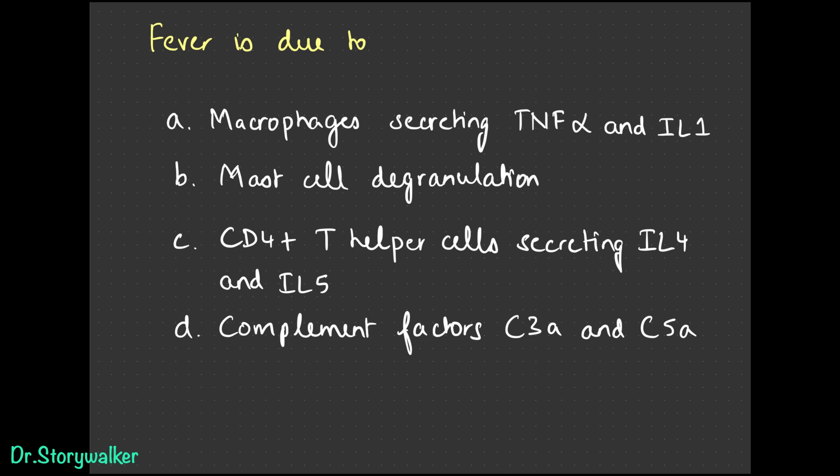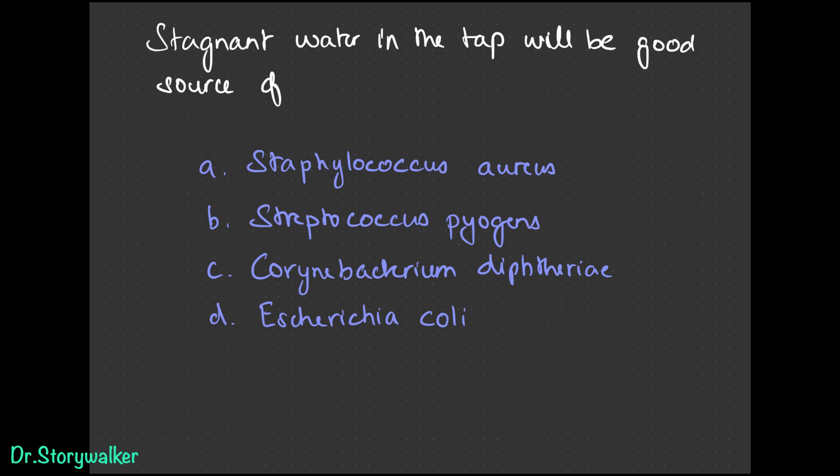What causes fever? It is macrophage-secreted tumor necrosis factor alpha and interleukin-1. In allergy, mast cells go crazy; interleukin-4 and interleukin-5 help in antibody production; and complement factors C3a and C5a increase vascular permeability. For stagnant water, the bacteria we can expect include E. coli and the other organisms — names you should be familiar with from earlier.